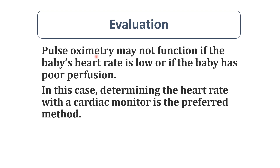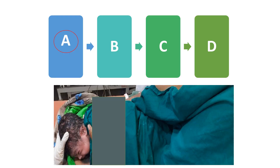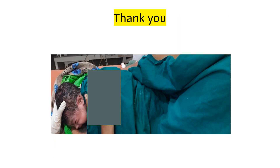Pulse oximetry may not function if the baby's heart rate is low or perfusion is very poor. In this case, determine heart rate with a cardiac monitor — 3-lead ECG is the preferred method. I have covered Step A to maintain the airway; in another video I will cover the B, C, and D steps.